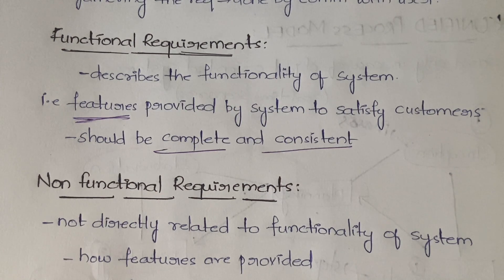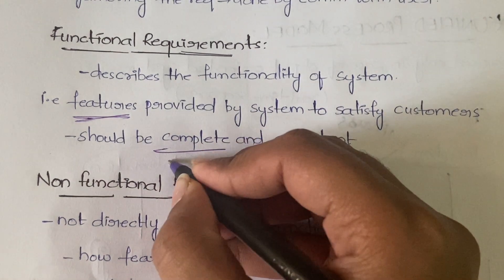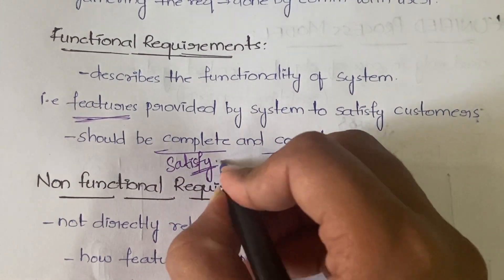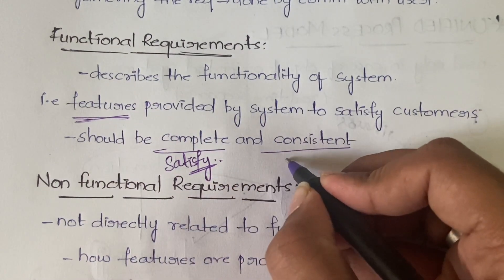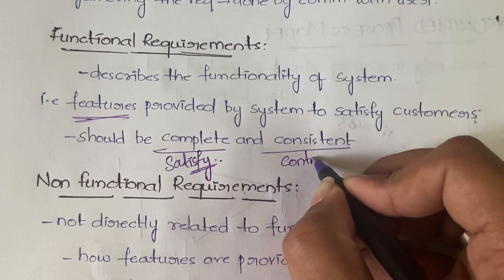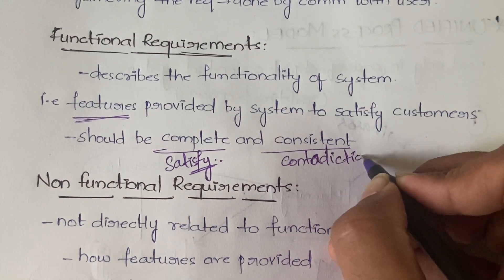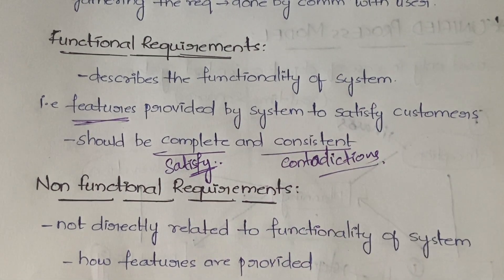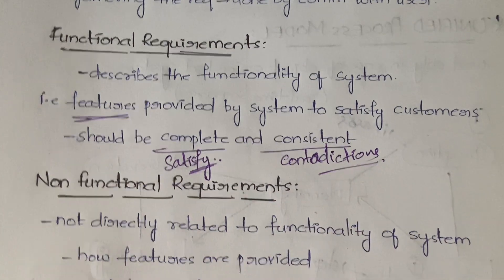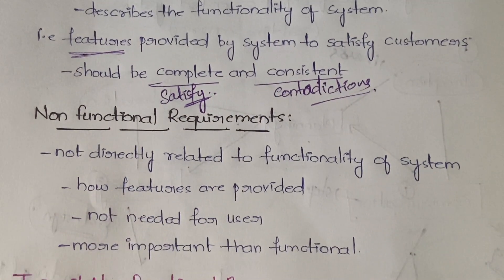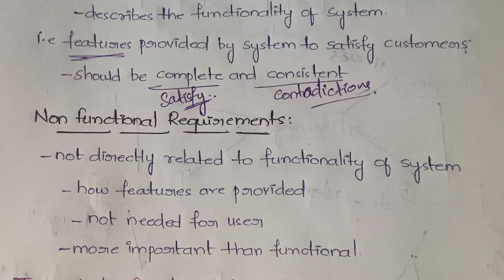Complete means all the requirements the user is requesting should be satisfied. Consistent means the requirements should not have any contradictions. So functional requirements must be both complete and consistent. Under functional requirements, we don't have any further subcategories.